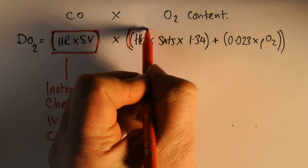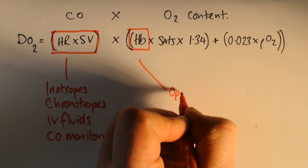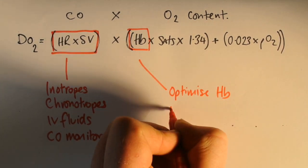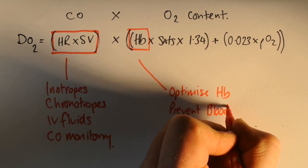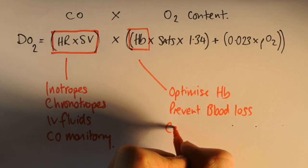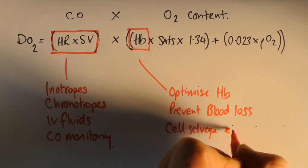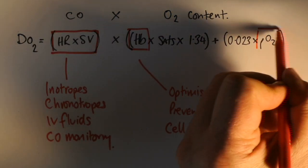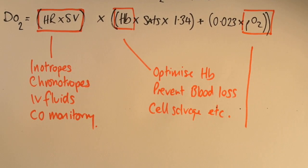In terms of the O2 content, how can I alter that? Well I can alter the hemoglobin concentration, so I can optimize it whether that's preoperatively or intraoperatively to ensure that we optimize oxygen carriage as best we can. Techniques to prevent blood loss, so hypotensive anaesthesia or careful surgical technique and use of cell salvage to recycle those lost red cells.